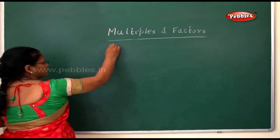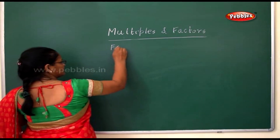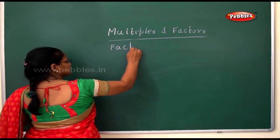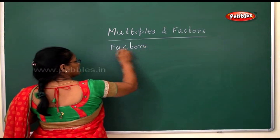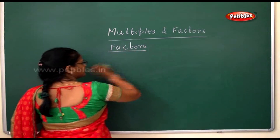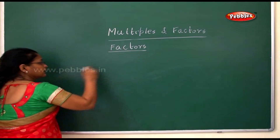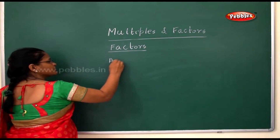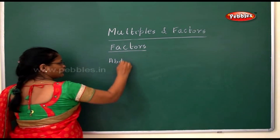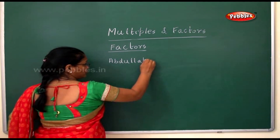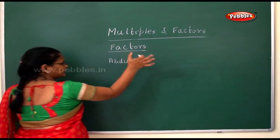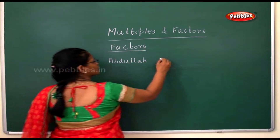Next we move on to factors. You must have understood multiples. Now the next topic is factors. There were two children, Abdullah and Fatima. I will tell you a small story about factors.